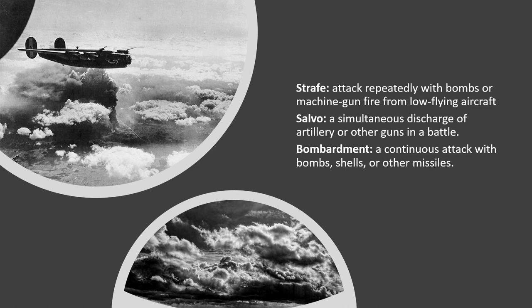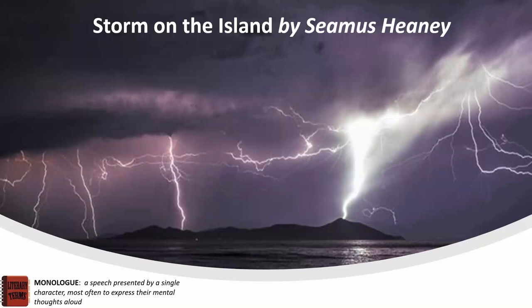On screen you can see some vocabulary linked to those military images. We've got 'strafe' — to attack repeatedly with bombs or machine gun fire from low-flying aircraft. We've got 'salvo' — a simultaneous discharge of artillery or other guns in battle. And 'bombardment' — a continuous attack with bombs, shells or other missiles. If you pause the video and find those words in the poem, make a little note of what they mean, as that will help you understand the poem as we go on.